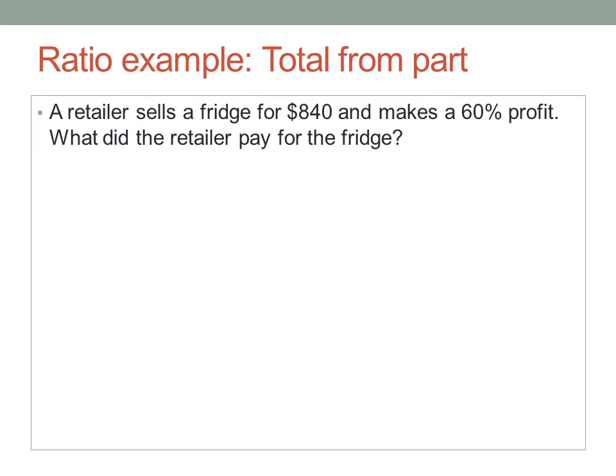Let's try another example — total from part. A retailer sells a fridge for $840 and makes a 60% profit.